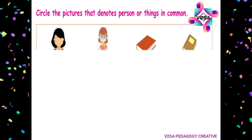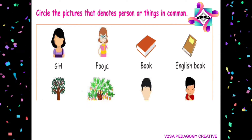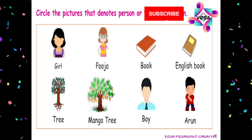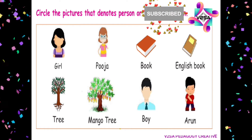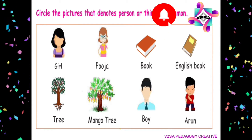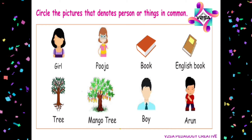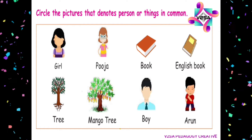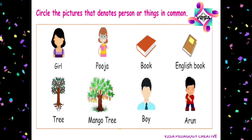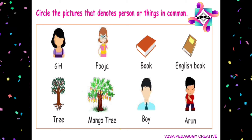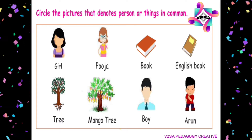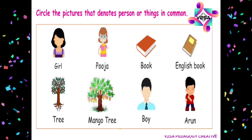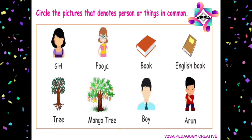Circle the pictures that denote persons or things in common. Here are some pictures: girl, Pooja, book, English book, tree, mango tree, boy, Arun. These are things and persons. This is common noun.